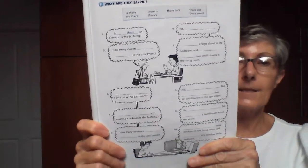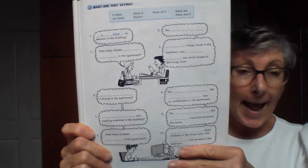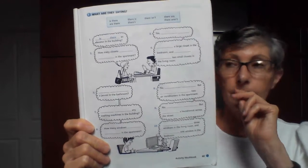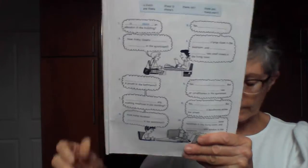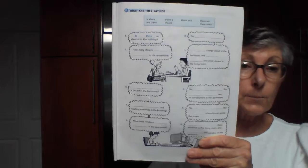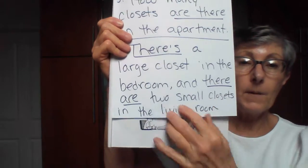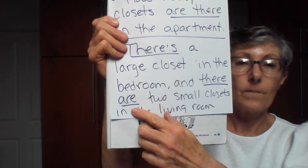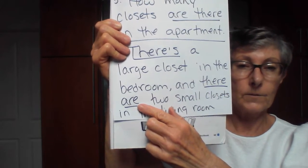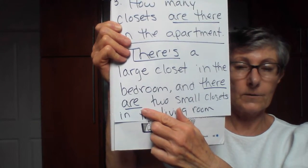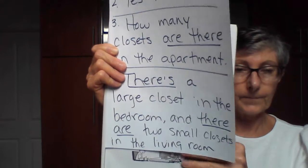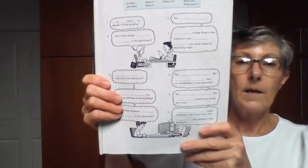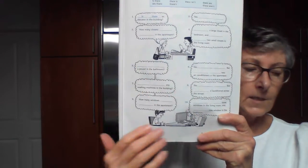There's a large closet in the bedroom. And the next part — is that singular or plural? Correct — it's plural! So that needs to be 'there are' — there are two small closets in the living room.